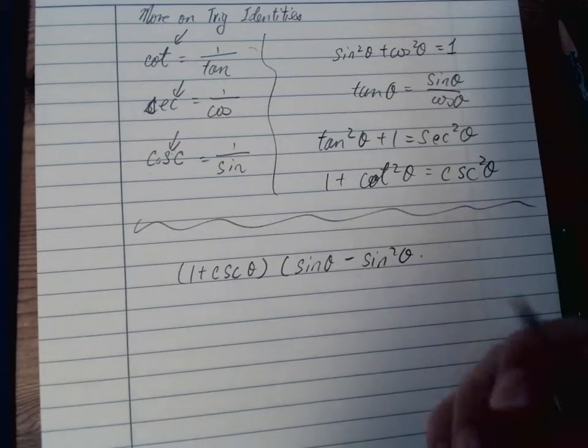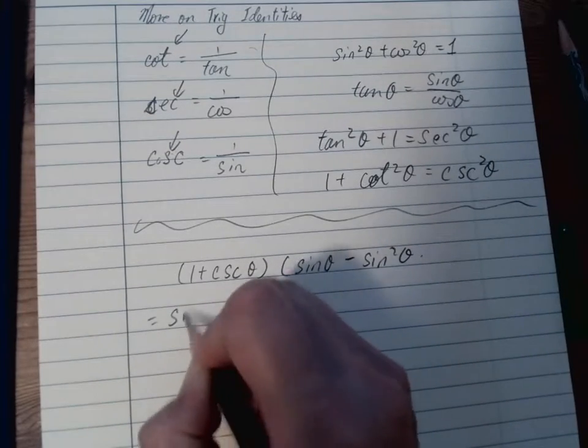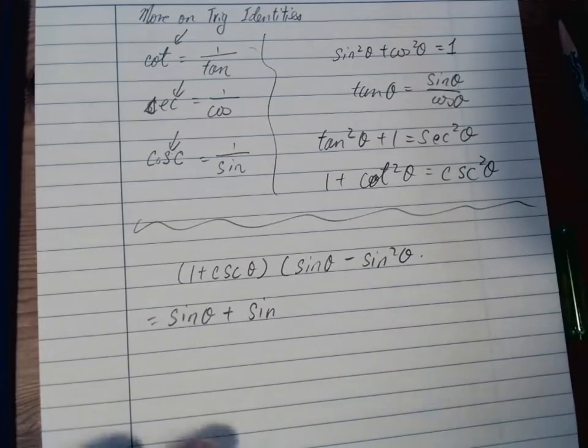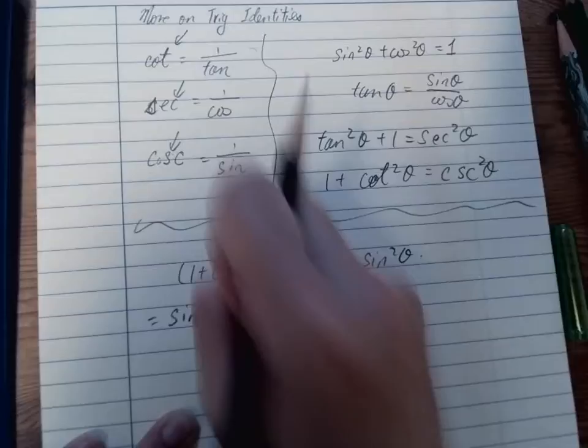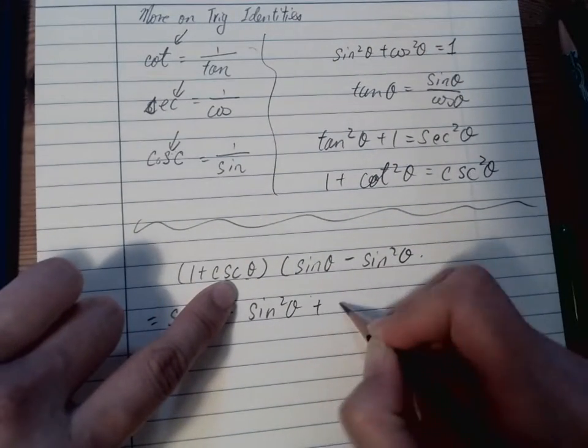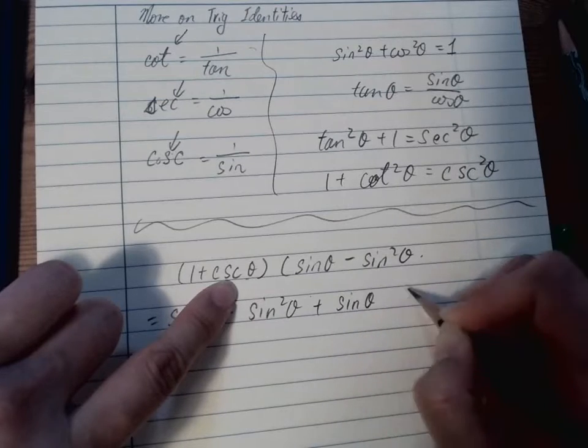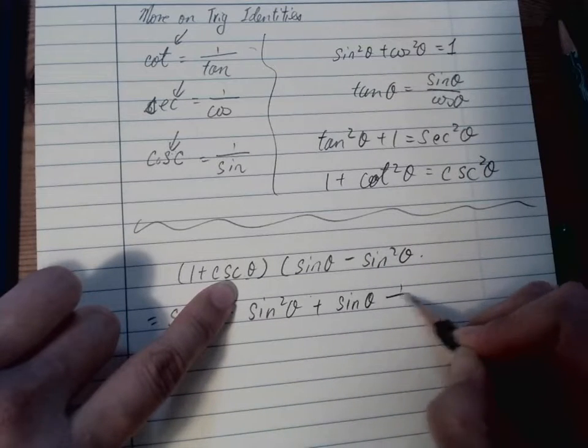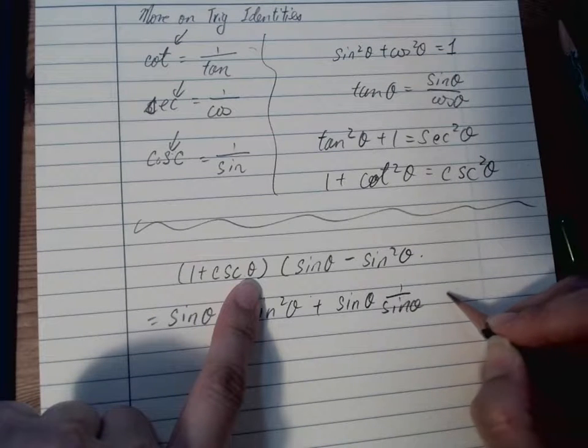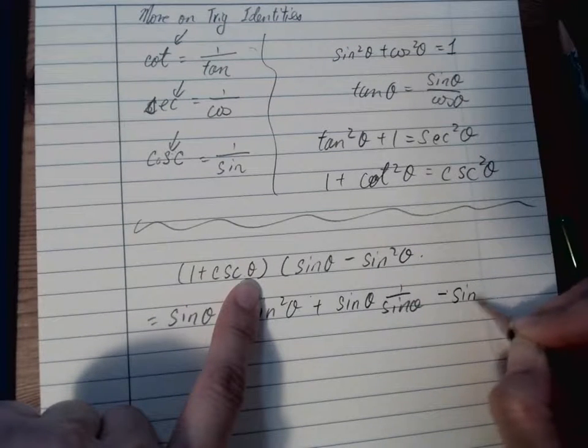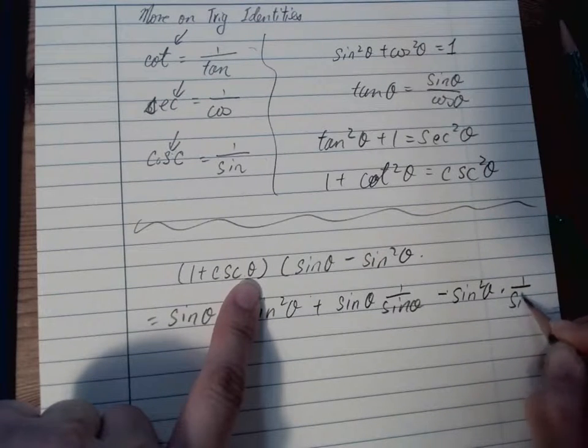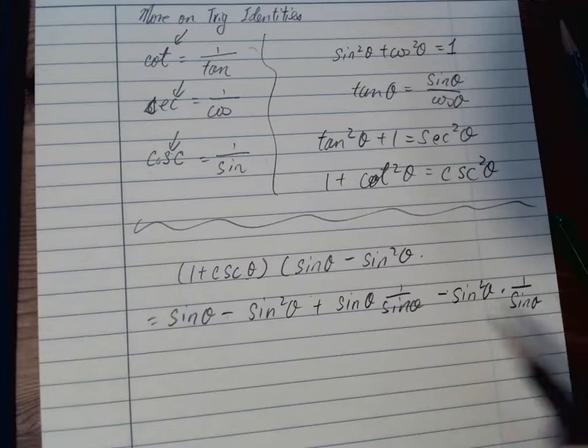So first of all, I will expand that first. So I get sin theta minus sin squared theta, and then plus sin theta. Cosecant is actually 1 over sin theta, and then we have minus sin squared theta times 1 over sin theta. Usually I will just change that.